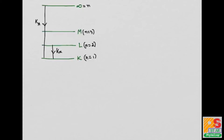For the L absorption edge, it is the transition from n equals infinity to n equals 2. Therefore this is the L absorption edge. Now it is very clear that the difference between the energies of the n equals 1 state and the infinite state can be expressed accordingly.